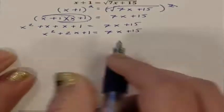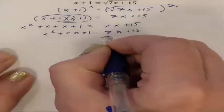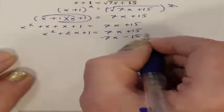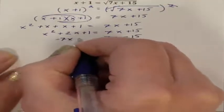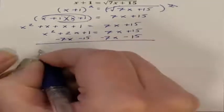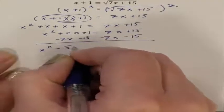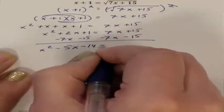My job is to solve for x, so I need to first make the equation equal to 0. So we're going to move the 7x and move the 15. So I have x squared minus 5x minus 14 equaling 0.